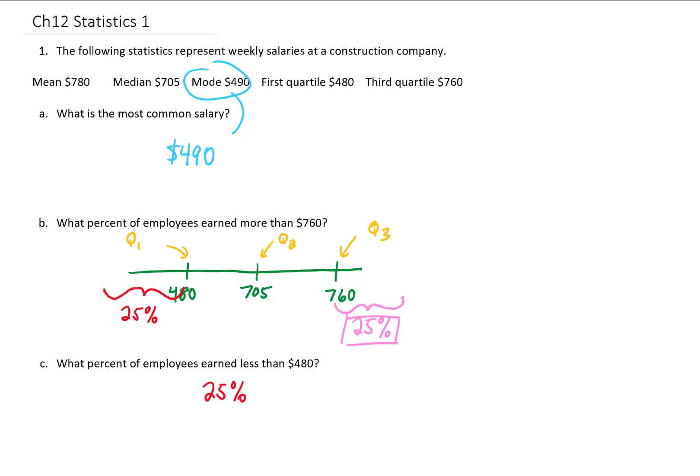Now, if you asked what percentage of the employees earned less than $705, the answer to that question would be 50%. Because 705 is the median value, 50% of the data falls below or above that value.